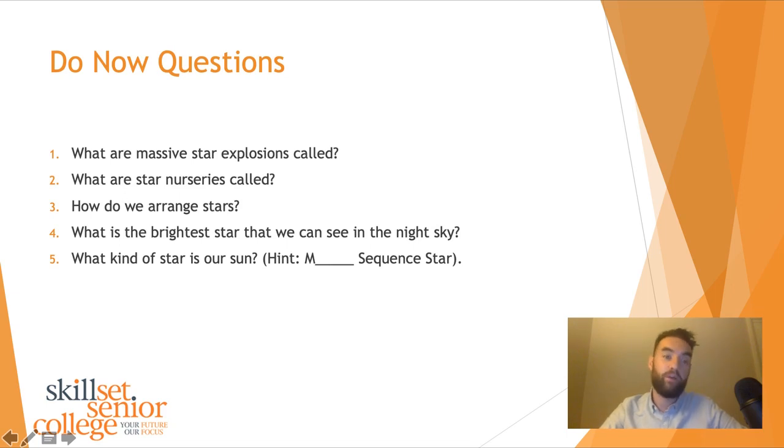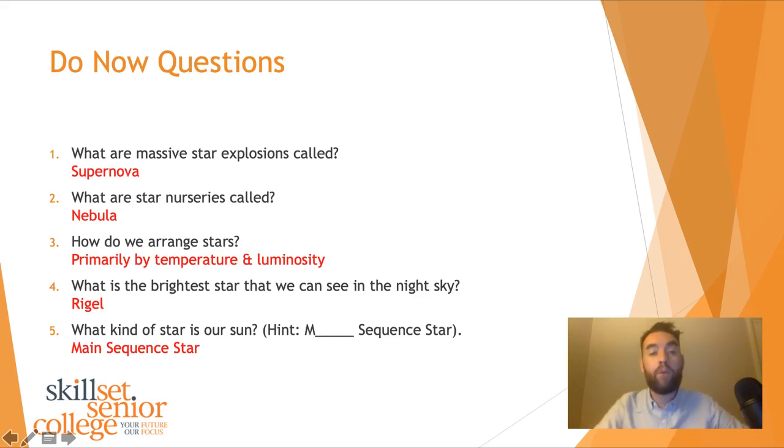Write these down in your book if you want or answer them on Google Slides. We're doing our questions. What are massive star explosions called? They're called supernova. Supernova explosions only happen when we have a high mass star. High mass or big stars fill up with that iron core, nuclear fusion can't happen anymore, the star starts to collapse in itself and the whole thing explodes.